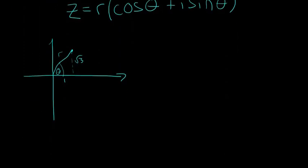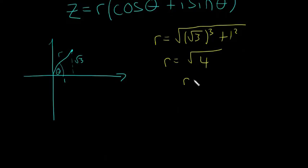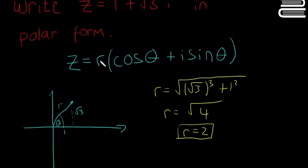And then I'm going to calculate r. So r equals the square root of the square root of 3 squared plus 1 squared. So that means r equals the square root of 4, and r equals 2. So now we have one part of our polar form solved.